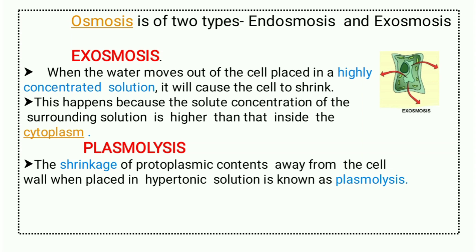What is exosmosis? Exosmosis is a process when we have a hypertonic — meaning very concentrated — solution in which the water content is very low. In such a solution, when a cell is placed, the water of the cell moves outside to maintain equilibrium, and as a result the size of the cell will shrink. This is exosmosis.